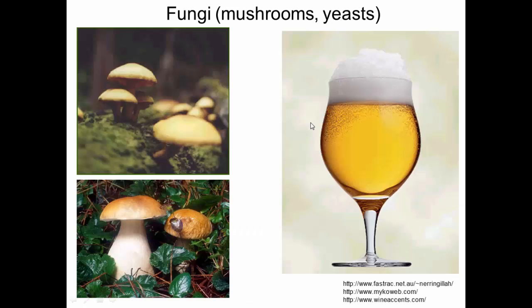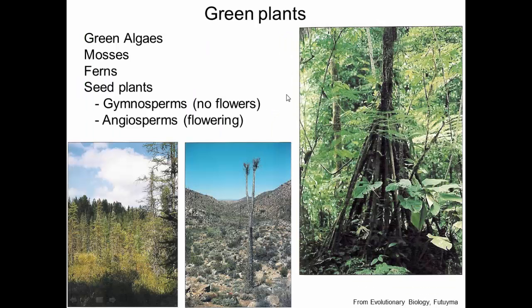Fungi are mushrooms, toadstools, and yeast. One reason we study yeast so much in biology is that it's a eukaryotic organism more closely related to us than any plant we could grow — and it's single-celled so it grows quickly. Yeast are actually more similar to us than Arabidopsis or E. coli, and they also make beer. Green plants include algae, mosses, ferns, and seed plants: gymnosperms (no flowers) and angiosperms (with flowers). There's a huge diversity within green plants — we could easily have another phylogeny for plants as large as the one for animals in this class.